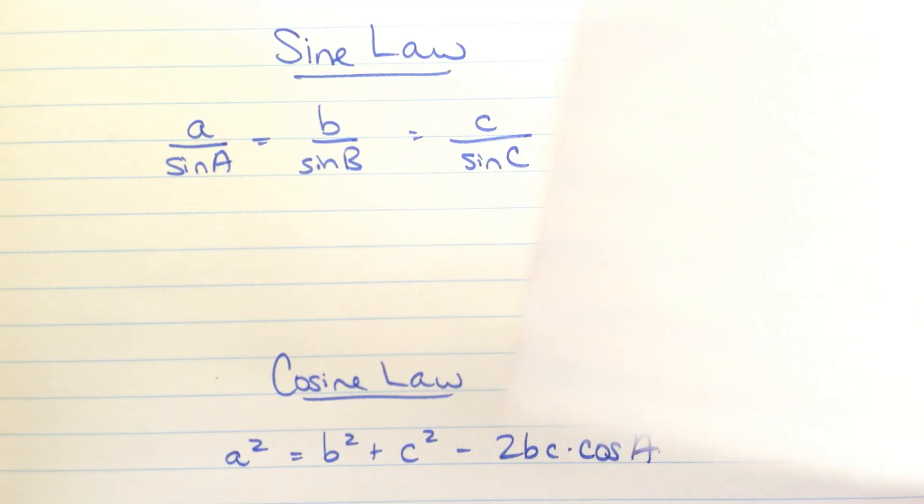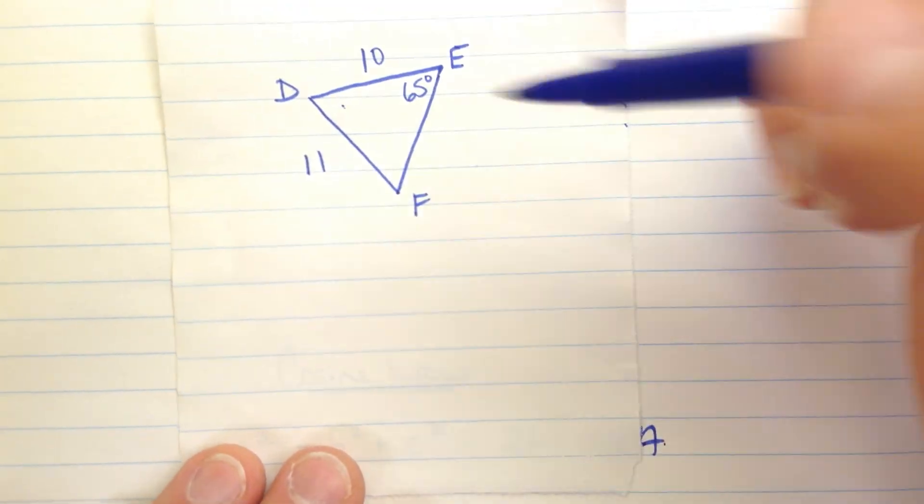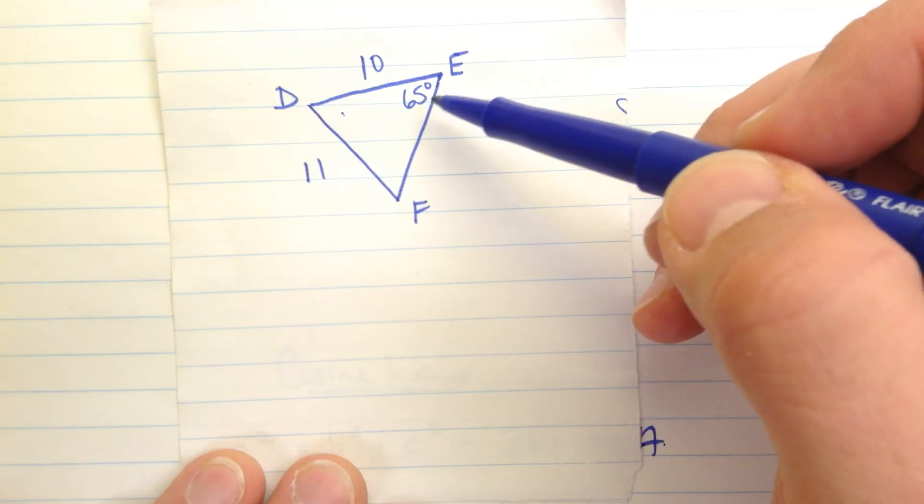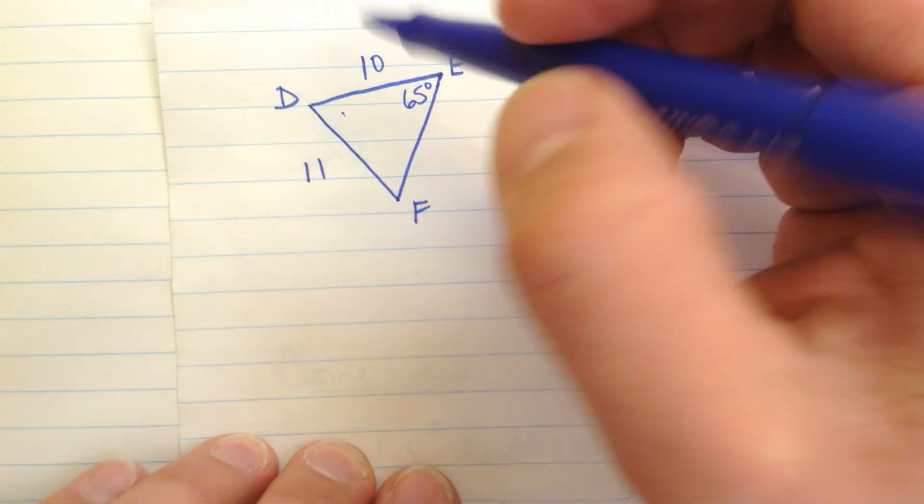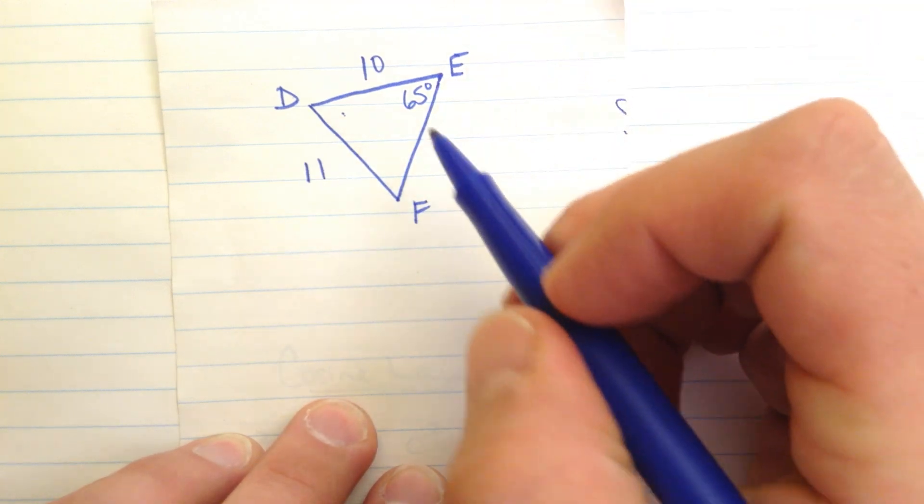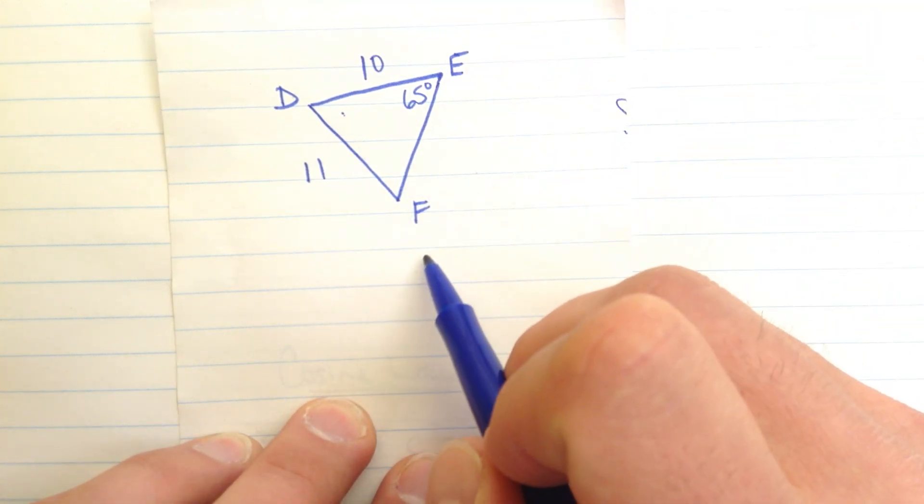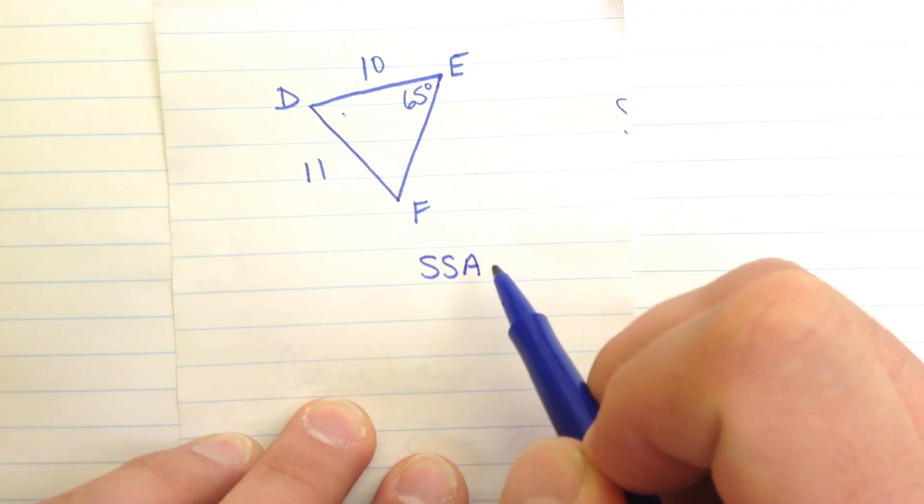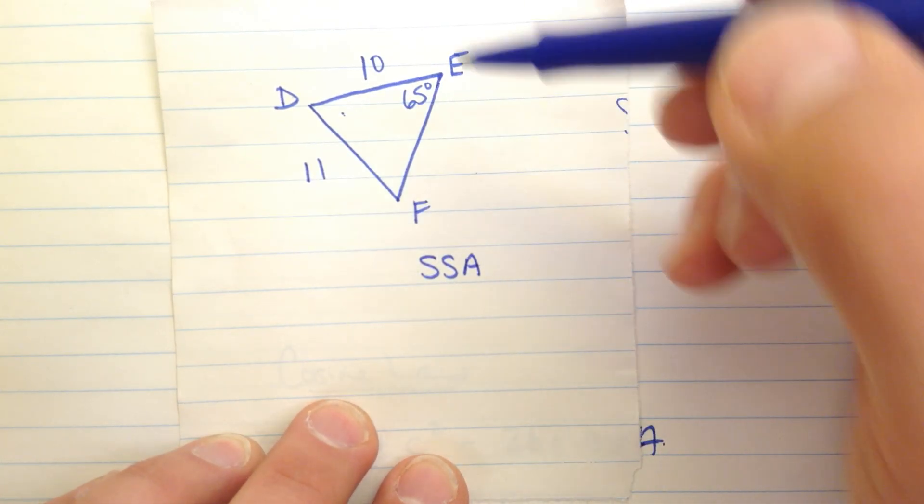Alright let's try another one here. How about this one? DEF here. I've got two sides and I have an angle. Now being careful though that angle is over here. I've got two sides and the angle is not between them. So we might write, we often write side side angle because the angle is not between the two sides. It's important.